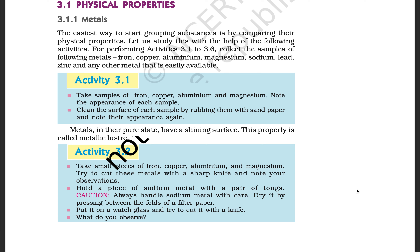Note the appearance of each sample. Clean the surface of each sample by rubbing it with sandpaper and note their appearance again. When you rub the materials, you will see that the colors of iron, copper, aluminium, and magnesium are all different from one another. The first property is that the color is different for each metal. Metals in their pure state have a shiny surface — this property is called metallic luster.